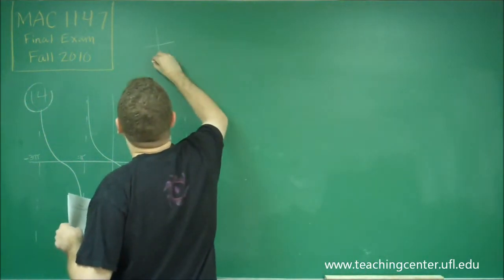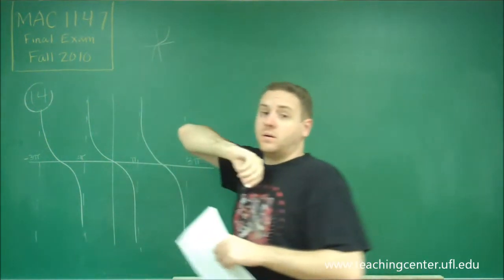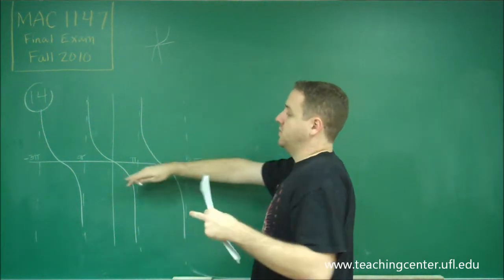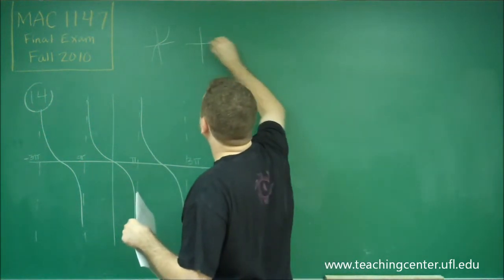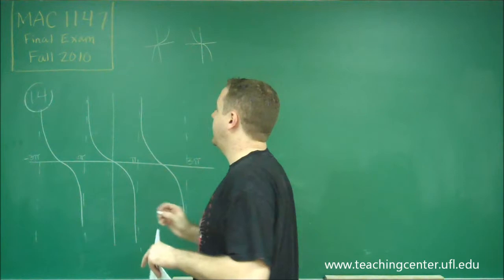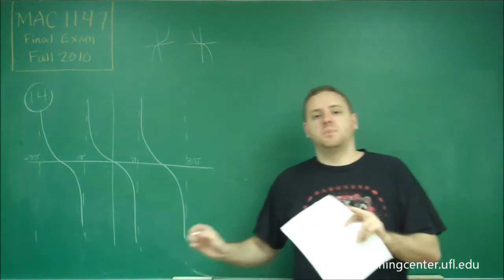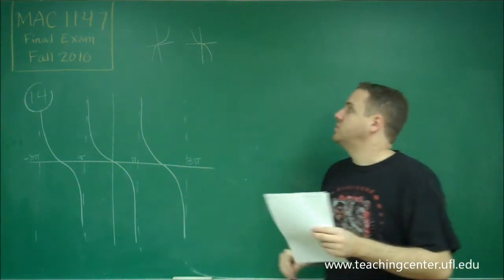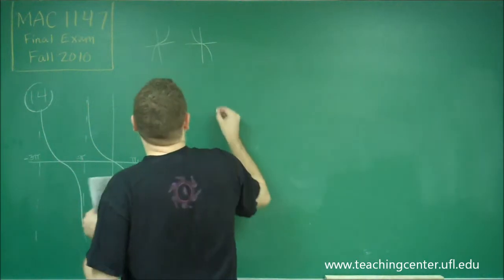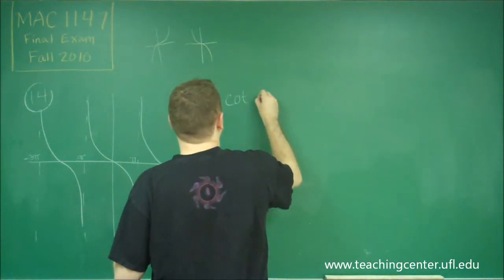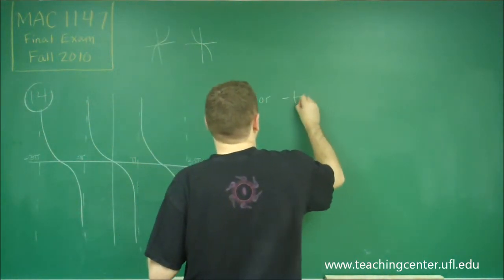Remember, tangent graphs normally go up, so if we flipped it it would look like that. Cotangent graphs normally go down, so if this is cotangent it just might be shifted side to side. We're either looking for cotangent or a negative tangent graph.